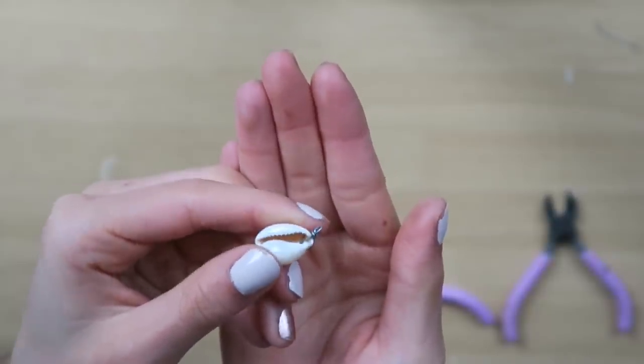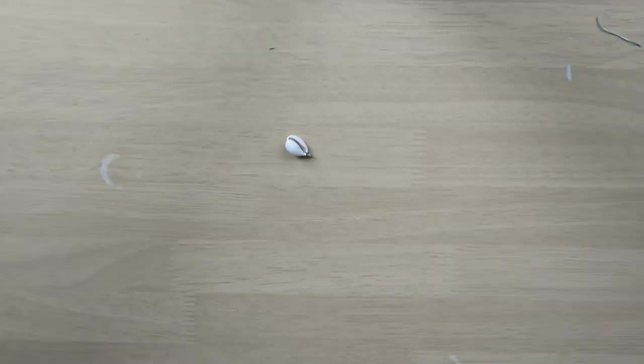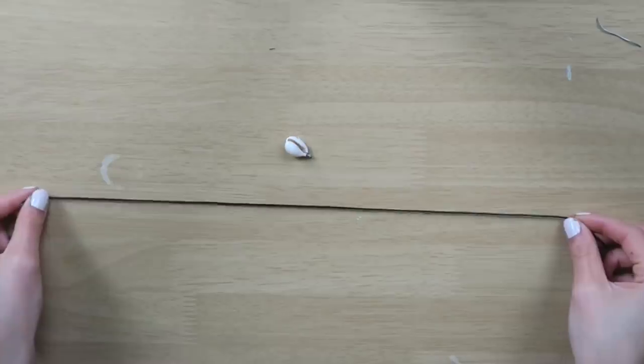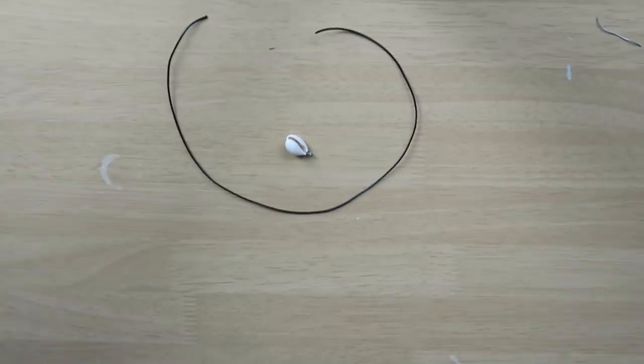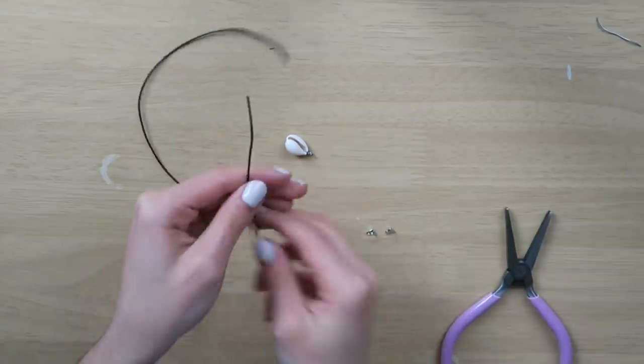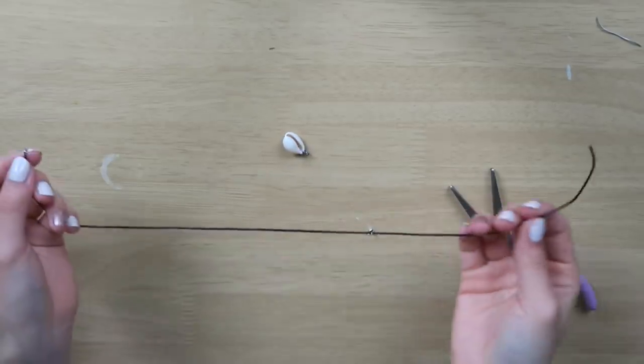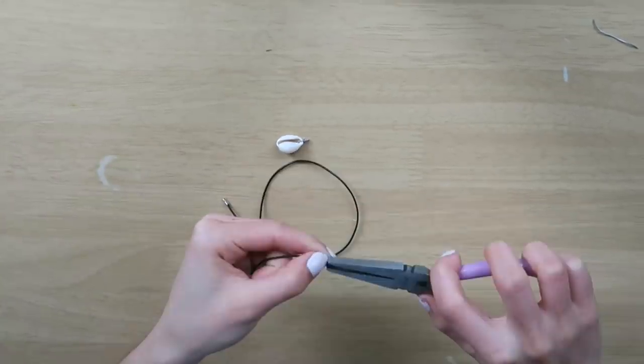Now you basically have your little shell pendant that you can put on to any necklace. Now for making the actual necklace, you're gonna want to measure out some string however long you want to fit around your neck. And you're just gonna want to take two metal crimp pieces. Then using the jewelry pliers again, you're just gonna want to apply these metal pieces to each side of the string and press them down.